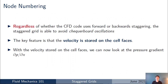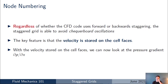So far we've set up the staggered grid and understood some of the interesting implications when you decide to code it up yourself. But what we really care about is: why does a staggered grid help avoid those checkerboard oscillations? Regardless of whether the CFD code chooses forward or backward staggering, the staggered grid is always able to avoid these oscillations because the velocity is stored on the cell faces of the original grid rather than at the centroids.